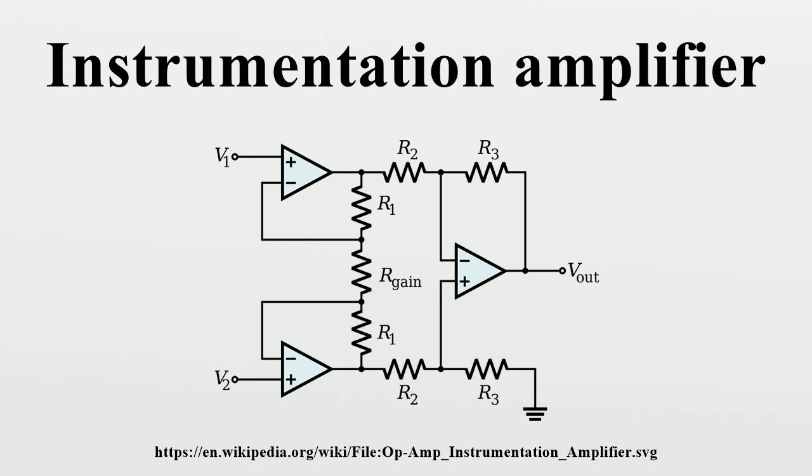The two amplifiers on the left are the buffers. With Rgain removed, they are simple unity gain buffers. The circuit will work in that state, with gain simply equal to R3/R2 and high input impedance because of the buffers.